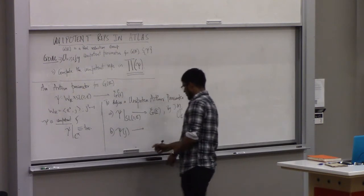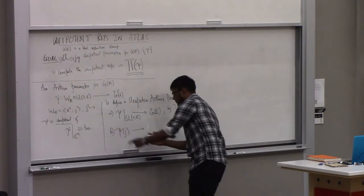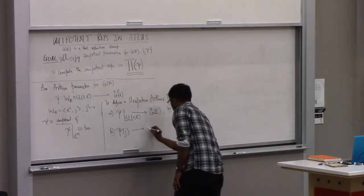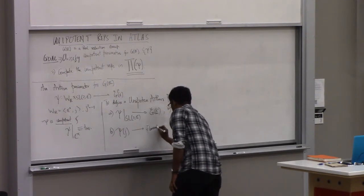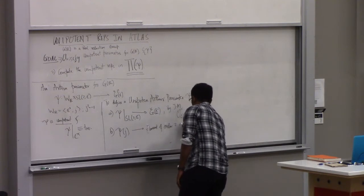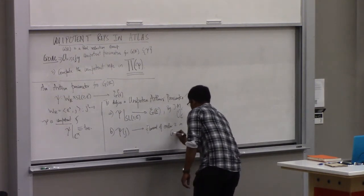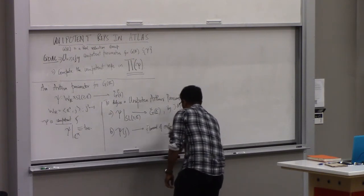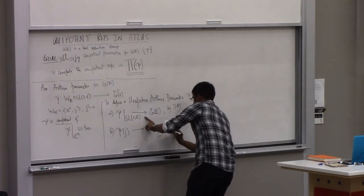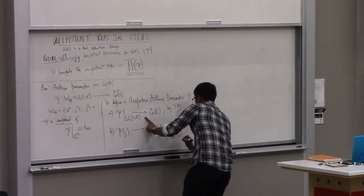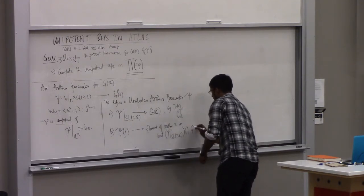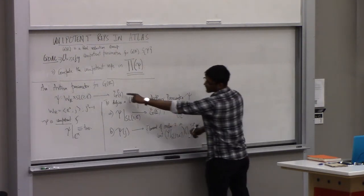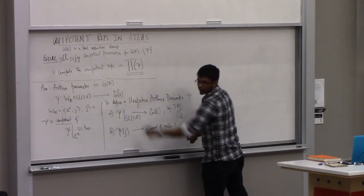And psi(j) is an element of order two in the centralizer of the map psi restricted to SL(2,C) intersect with G check gamma minus G check C. So it has to lie in the non-trivial component of G check gamma.